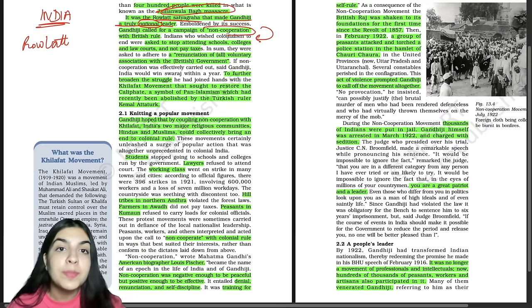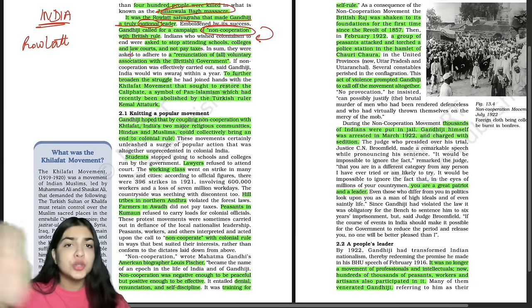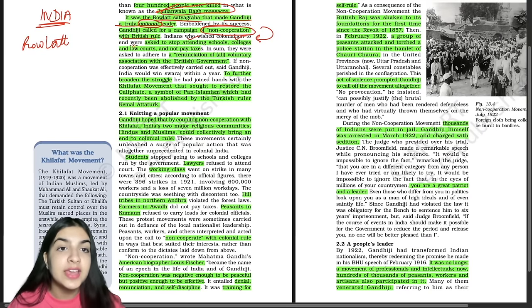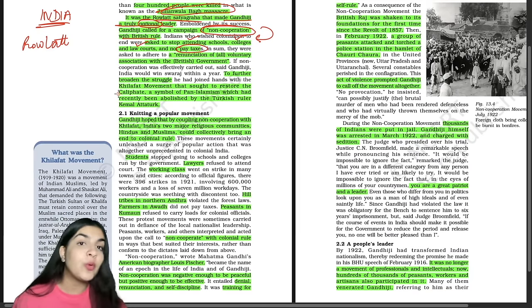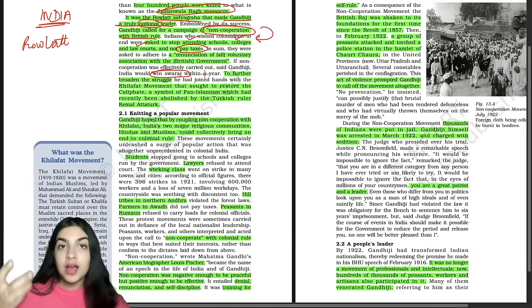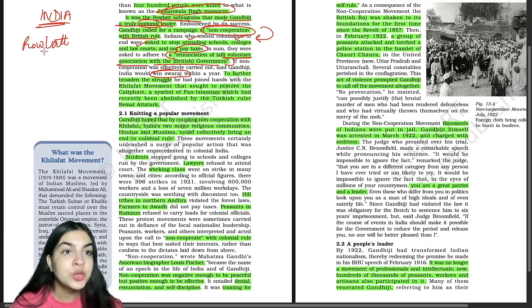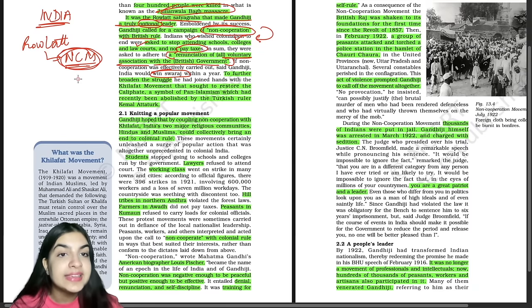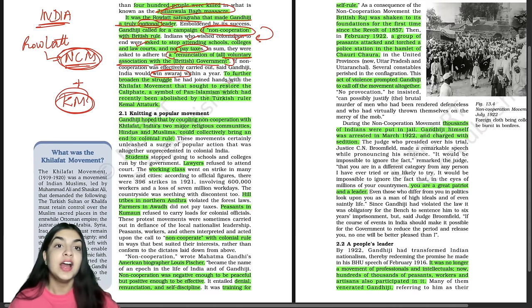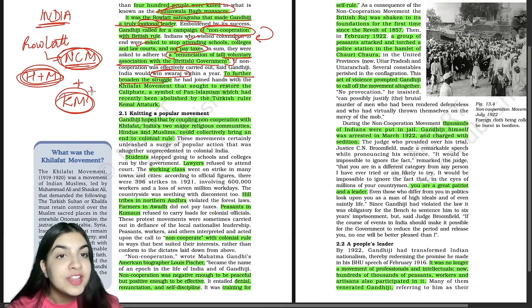Gandhi ji then launched the Non-Cooperation Campaign with British rule — students stop going to schools and colleges, lawyers refuse to attend courts, and taxes stop being paid. Gandhi ji said within one year we can win Swaraj. He called for a renunciation of all voluntary association with the British government. To further broaden the struggle, the Non-Cooperation Movement was joined with the Khilafat Movement, so that Hindus and Muslims could come together.